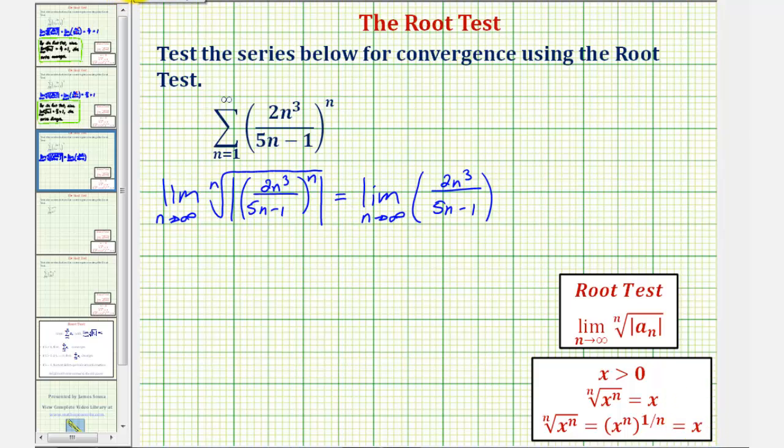And now to find the limit as n approaches infinity, notice how the degree of the numerator is greater than the degree of the denominator. The numerator is degree three, the denominator is degree one. And when this is the case, the limit is going to approach positive infinity. Notice how as n increases or approaches infinity, because we have n to the third in the numerator, the numerator is increasing faster, and therefore this limit is equal to infinity, which we know does not exist.